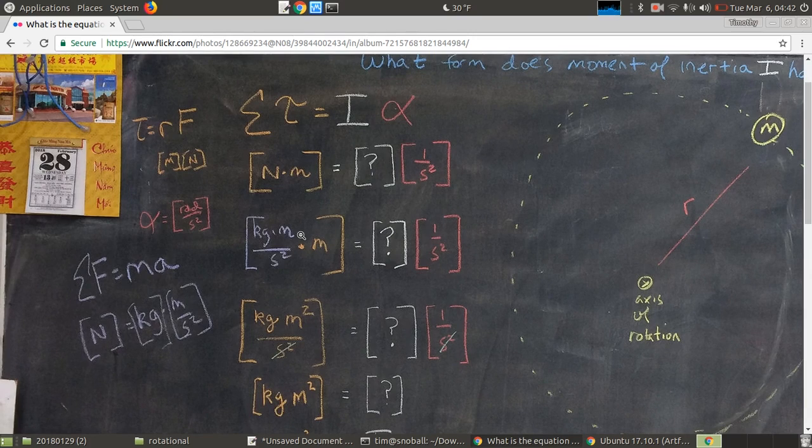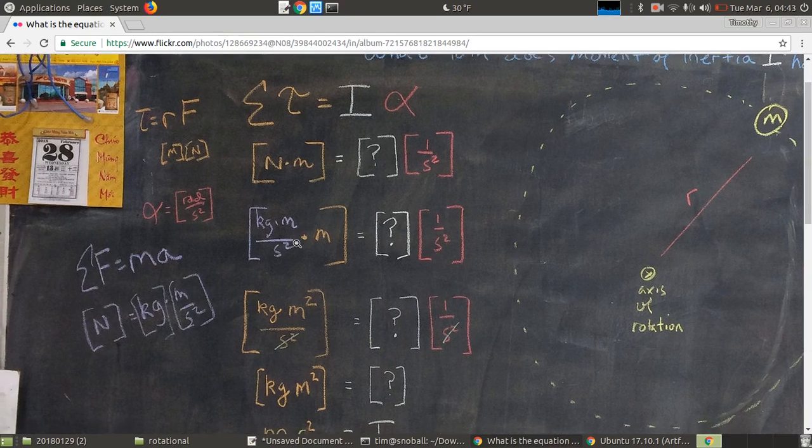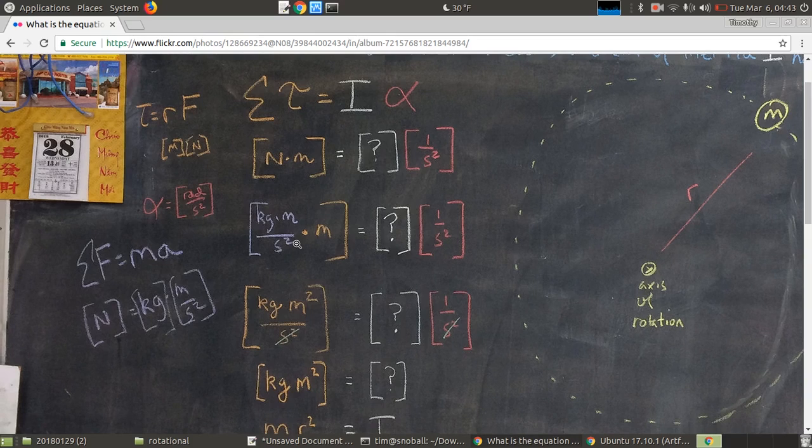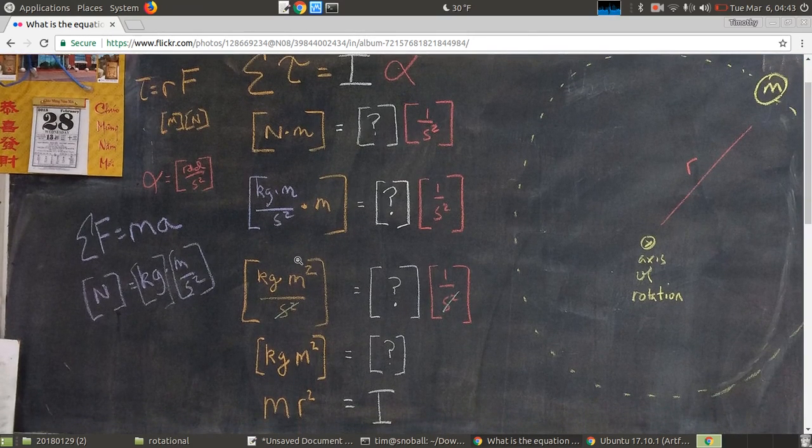I'm just doing dimensional analysis here. So for torque, I've plugged in Newton meters. We have no idea what this I is. But alpha, we know, is one over second squared, or radian per second squared. And I got the knowledge that the Newton is actually a derived unit as well. So I have sigma F equals ma over on the side. And that told me what the Newton really is. So I've plugged that in.